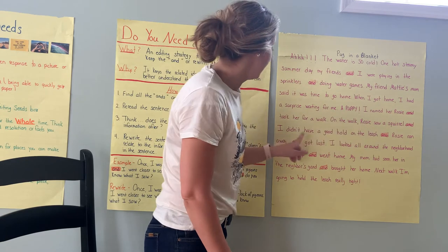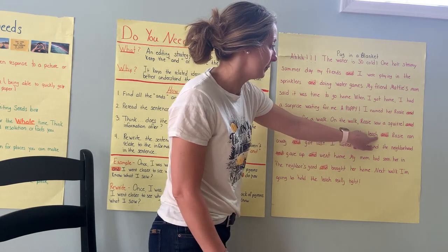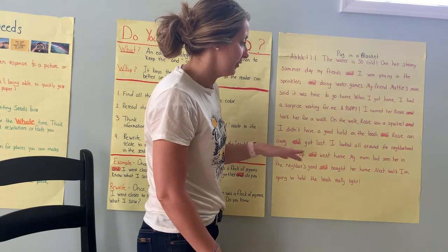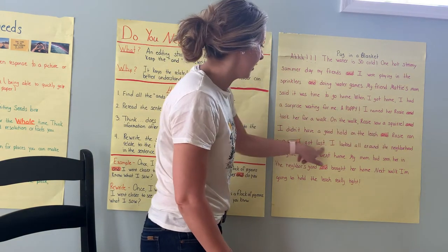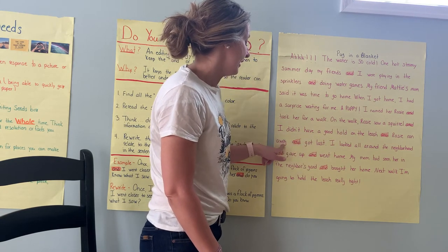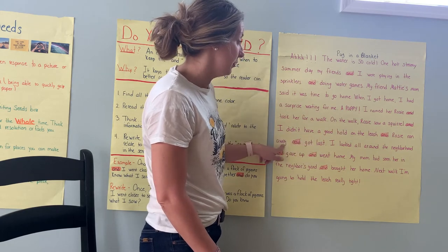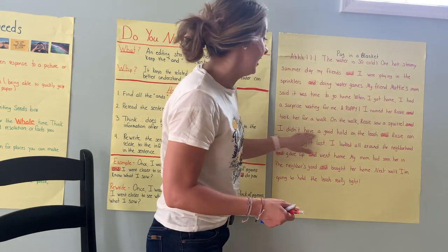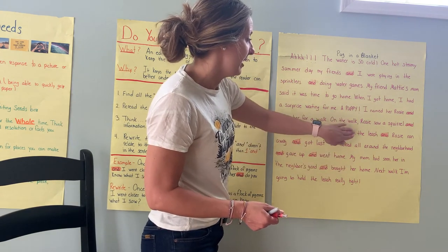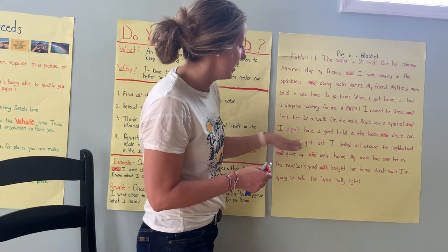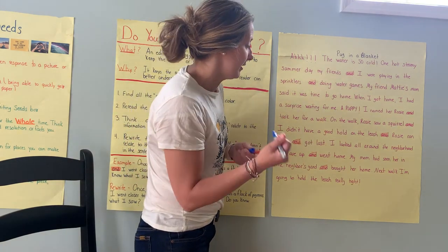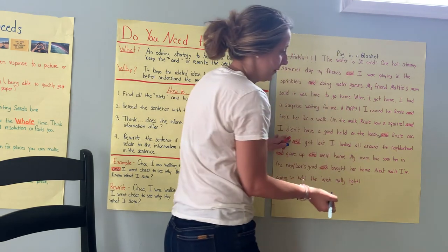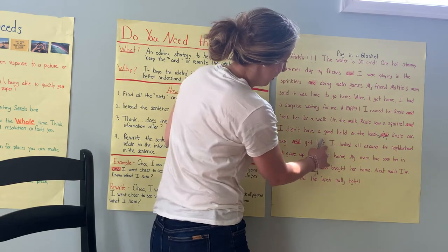Let's see: 'On the walk, Rosie saw a squirrel and I didn't have a good hold on the leash.' That seems like it would go together. So I could put a period there — and then maybe: 'Rosie ran away and got lost.' 'Ran away and got lost' — that tells what happened, those go together. So I think I am going to put a period right here, because seeing the squirrel and not having a good hold on the leash goes together better, and then Rosie running away and getting lost — those two ideas go better together. So when I go to rewrite my next draft, I'm going to put a period there and keep that and.